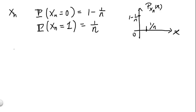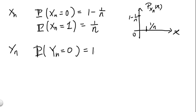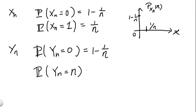On the other hand, we have the sequence of random variables yn, fairly similar to xn with a slight tweak. The similar part is that it also has a very high probability of being at 0, with mass 1 minus 1 over n. But on the off chance that yn is not at 0, it has a pretty big value, n. So it has probability 1 over n of being out there at n.